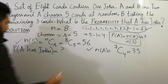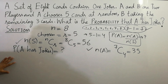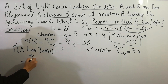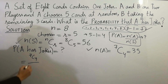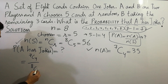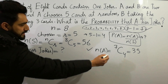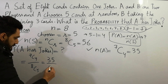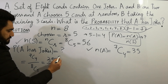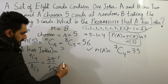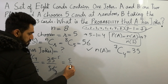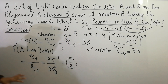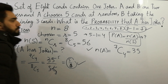Now I'm going to calculate the probability. Probability that A has the joker equals 7C4 divided by 8C5, which is 35 divided by 56, which simplifies to 5 over 8. So the probability that A has the joker is five over eight. This is the correct answer.